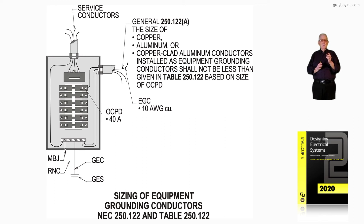We'll use the four-aught to stay on the same page. A number four-aught conductor requires a number two grounded conductor, as seen in the service equipment. A main bonding jumper, if it was a conductor, would be number two. And the grounding electrode conductor would be number two if it connected to structural steel or a metal water pipe, in accordance with 250.66.